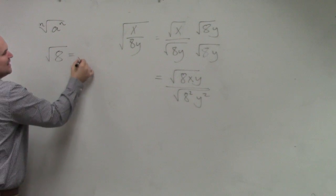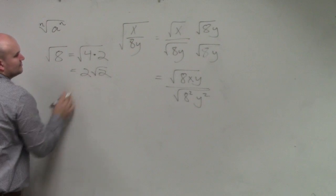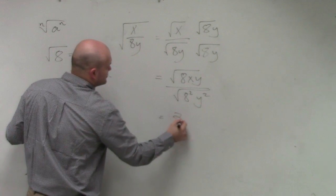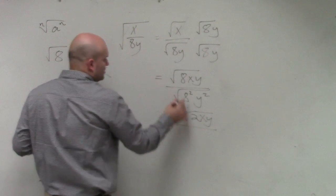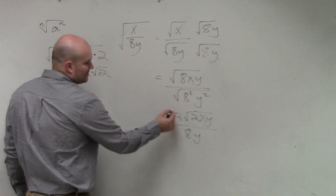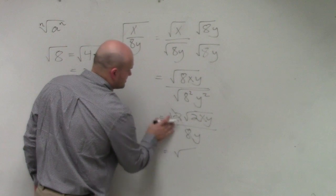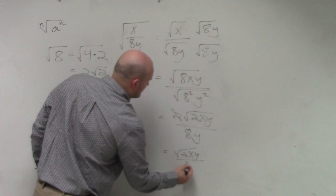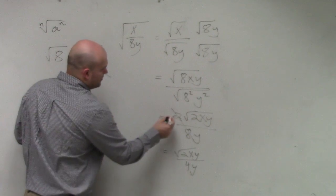The square root of 8 can be broken down into the square root of 4 times 2, which is 2 square root of 2. I should have done that. So therefore, I get 2 square root of 2xy all over 8y. And then that reduces to 1 fourth.